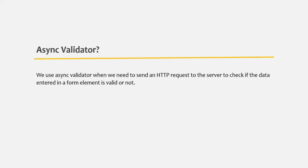We use an async validator when we need to send an HTTP request to the server to check if the data which the user has inputted inside a form control is valid or not. When we send an HTTP request to the server, the server might take some time in sending the response. And once we have the response, then only we can validate whether the data entered in a form control is valid or not. For that, we use an async validator.